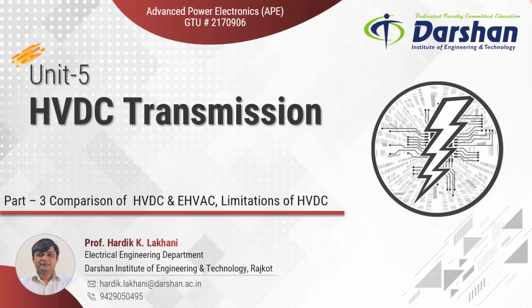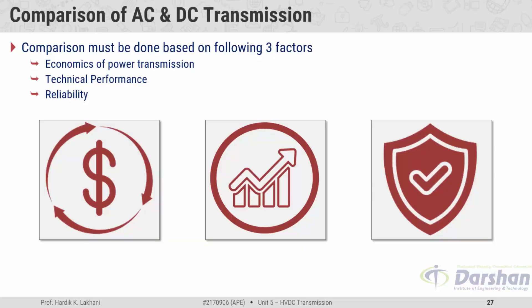This part of unit number 5 on HVDC transmission describes the comparison of high voltage DC transmission and extra high voltage AC transmission based on a number of factors. Apart from that, it also includes a few limitations of high voltage DC transmission systems. The comparison between these two types of transmission must be done based on three factors: economics of power transmission, technical performance, and reliability.